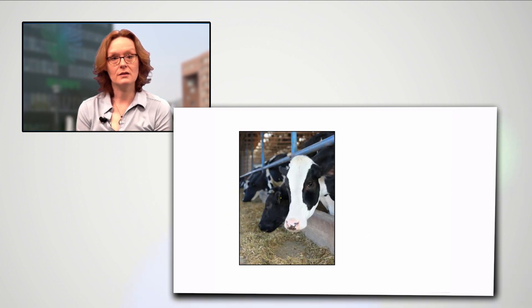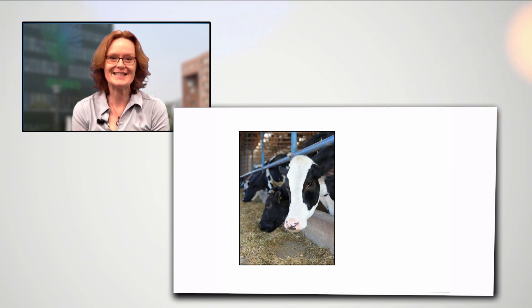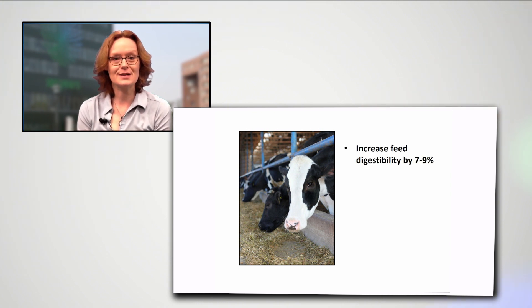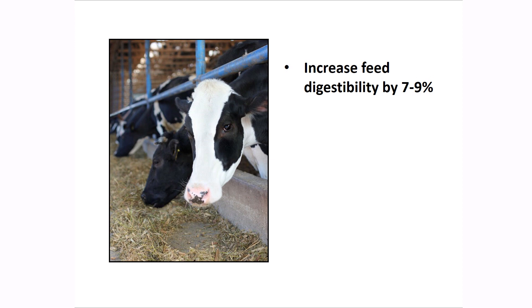Anaerobic fungal activity in the rumen increases dry mass digestibility of feed by 79%. As a consequence of this, they also enable ruminants to increase their fibrous feed intake.